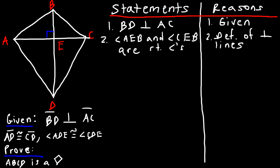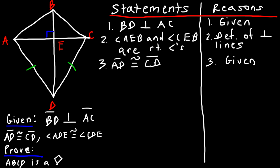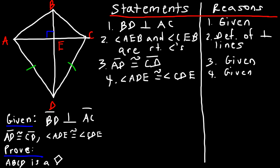Next we focus on the second given statement: AD is congruent to CD — that's given. We make a mark on the graph to show they're the same length. Then for statement four: angle ADE is congruent to angle CDE — also given.